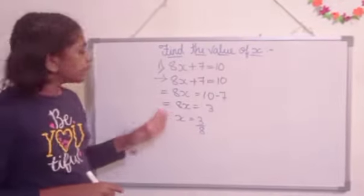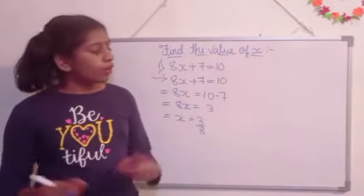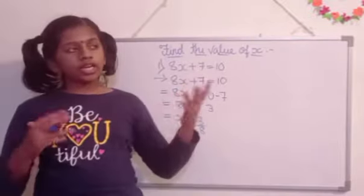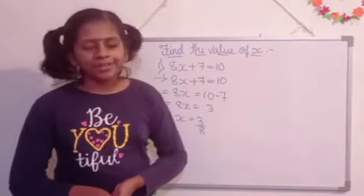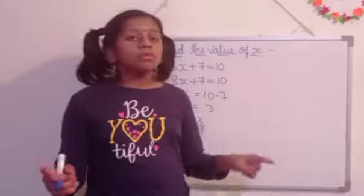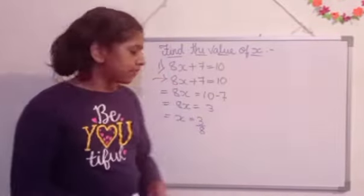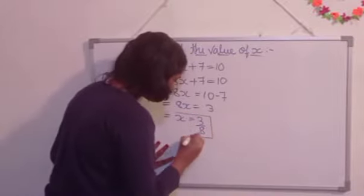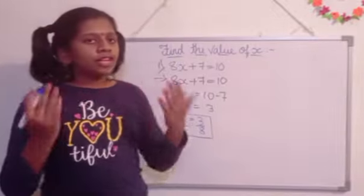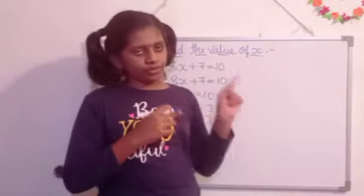So, here x is equal to 3 by 8 is there. So, to simplify means we cannot simplify. How can 3 be divided by 8 or 8 be divided by 2? Is it possible? No. So, we cannot simplify. x is equal to 3 by 8. So, the value of x is 3 by 8. So, it is a very simple method to solve the equations.